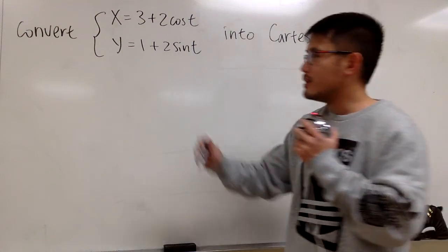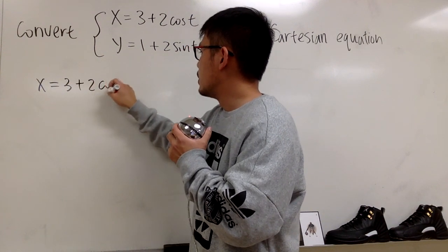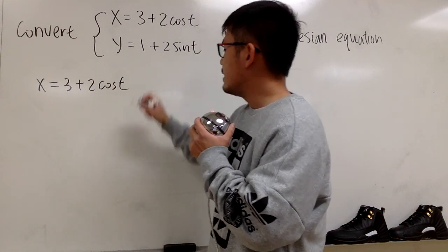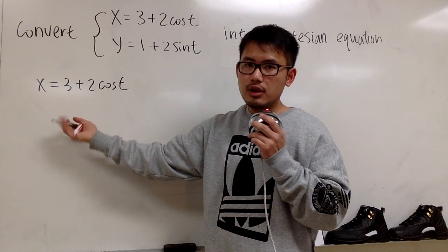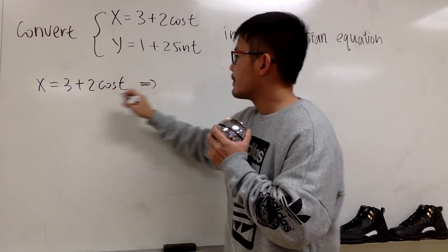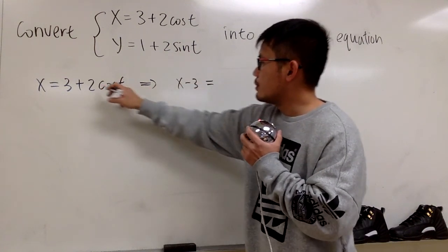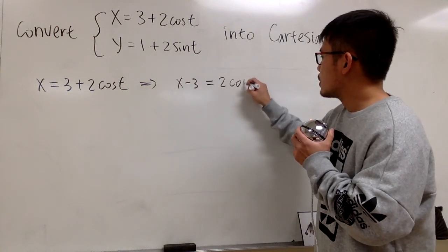Let me show you. For this one, we have x is equal to 3 plus 2 cosine t, and then do the usual deal, that's minus 3 on both sides. This is going to give us x minus 3 equals to 2 cosine t.